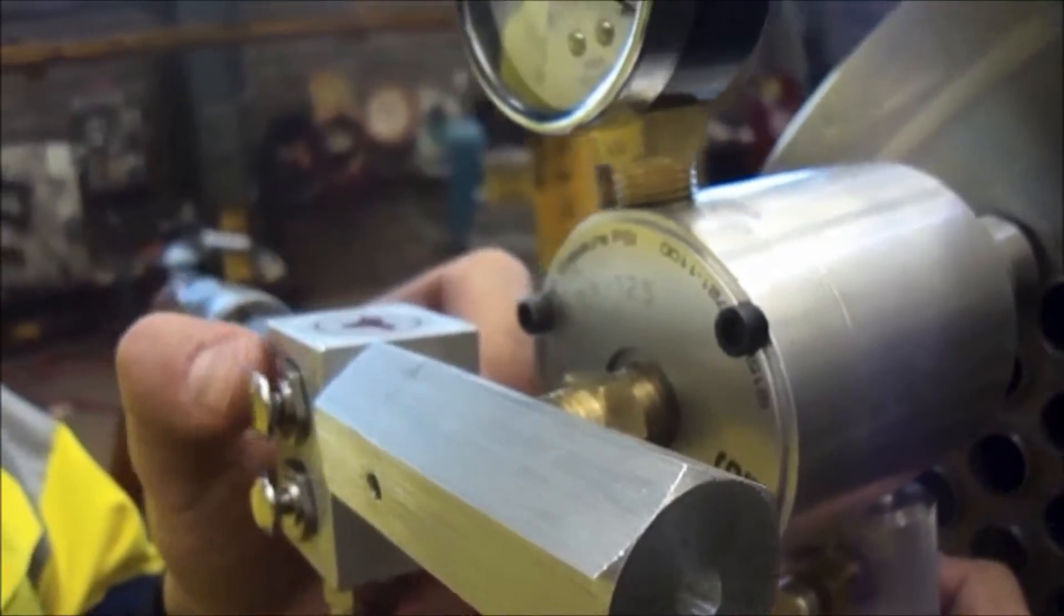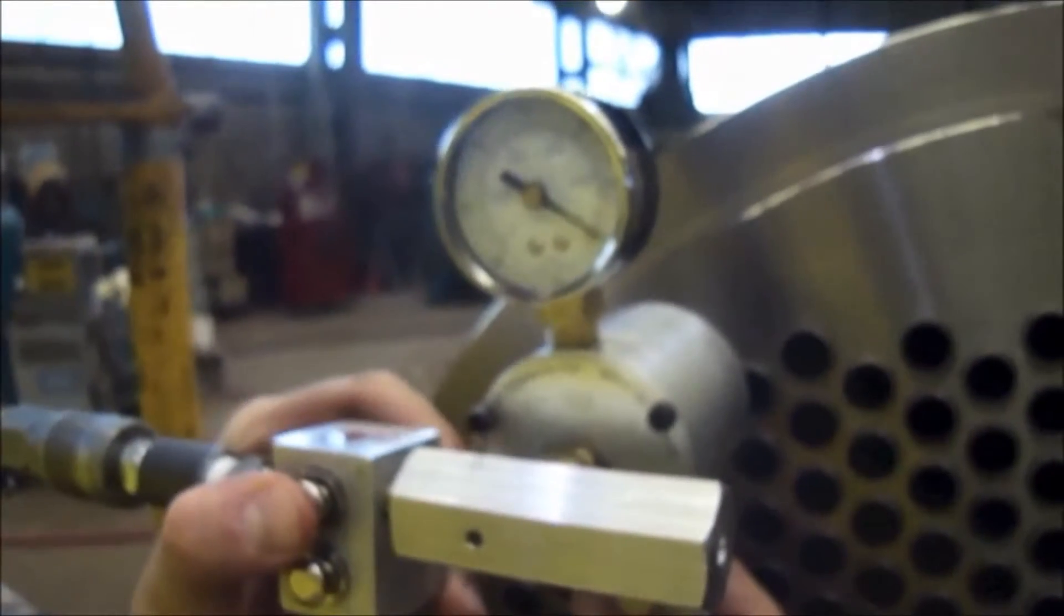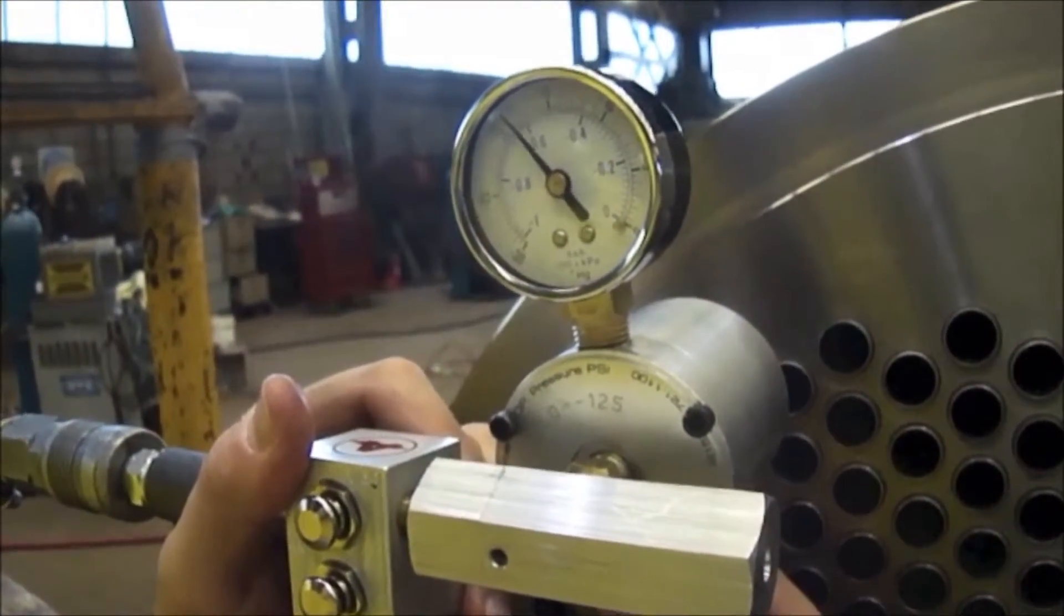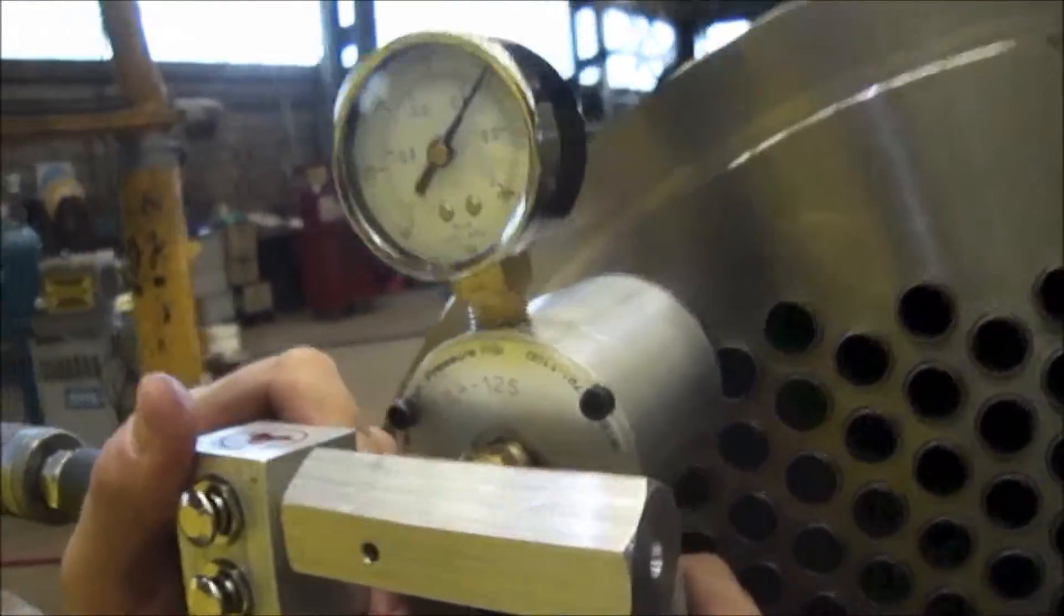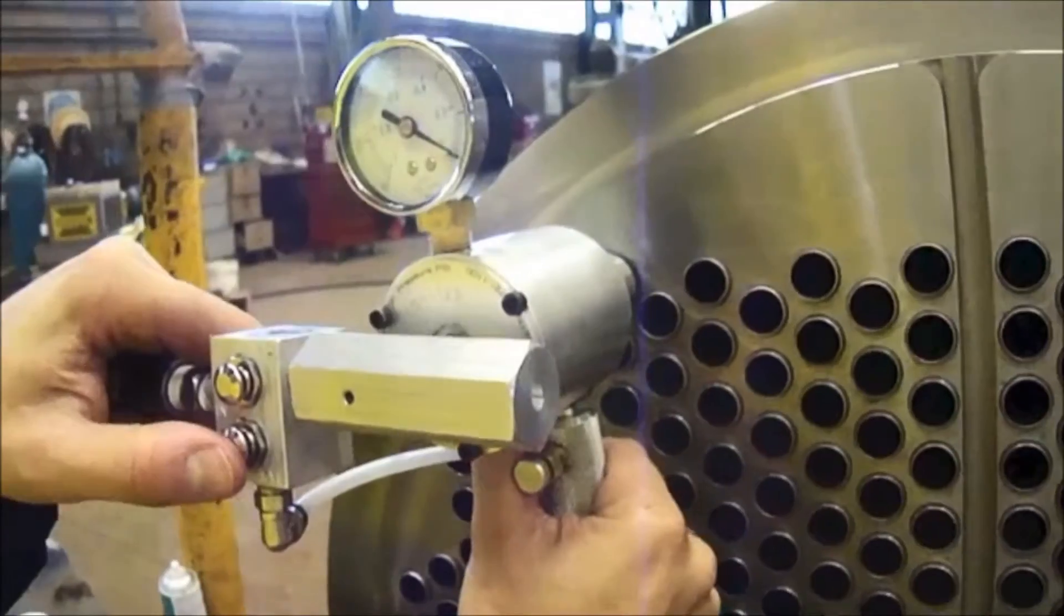After that, we vacuum it by pushing the VAC button. That's indicating we haven't got a good seal on it, so we're going to release it and reposition.